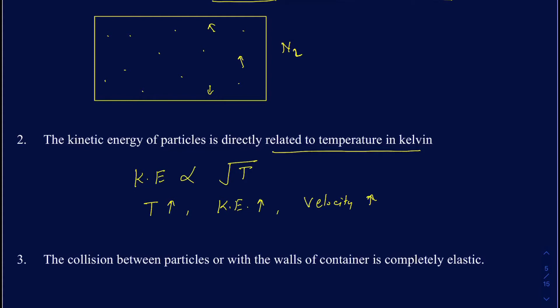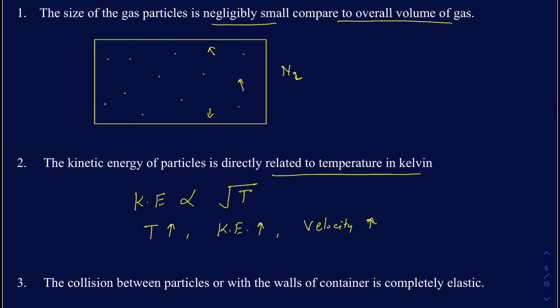These particles are moving in random directions. They could be moving toward one another or toward the walls of the container. So whenever they collide with one another or with the walls of the container, those collisions are considered to be completely elastic.